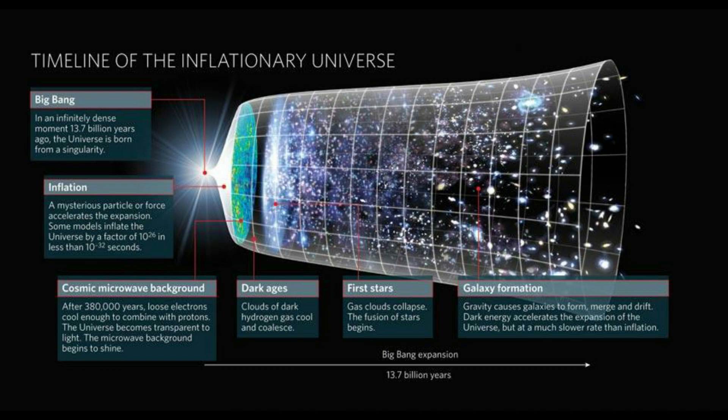The universe started at 13.8 billion years, then expanded to 46 billion light years on each side because of the expansion of the universe. That is why the total observable universe is about 93 billion light years across.